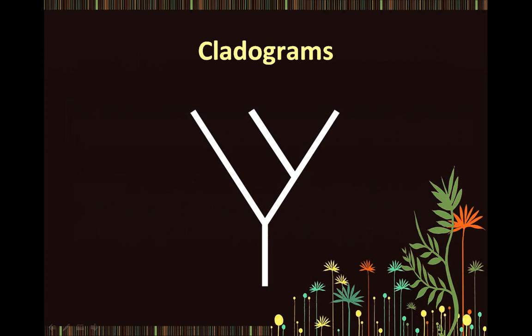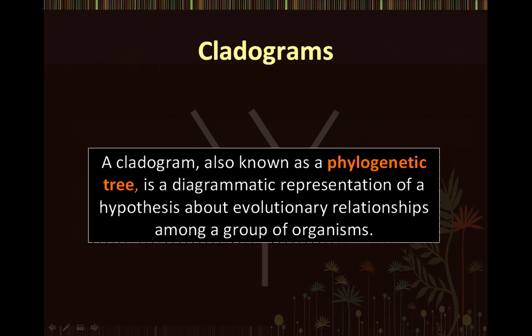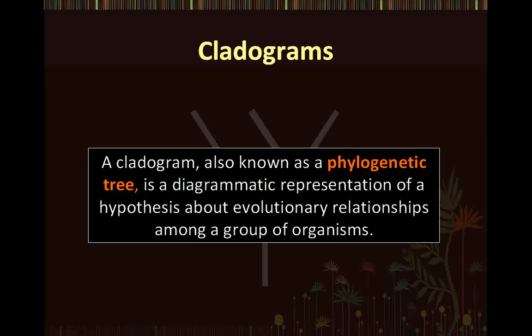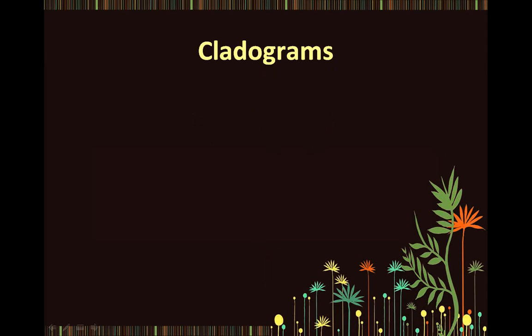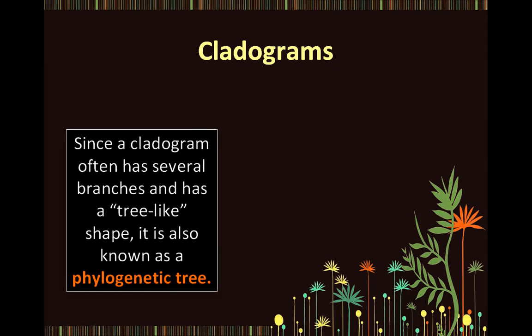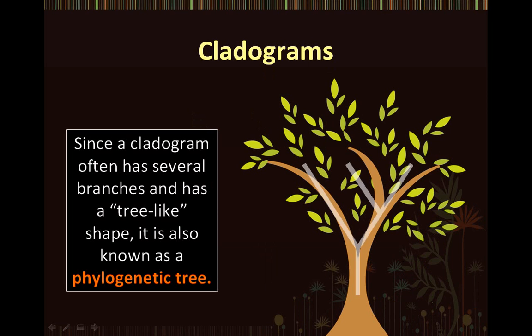Let's discuss cladograms. A cladogram, also known as a phylogenetic tree, is a diagrammatic representation of a hypothesis about evolutionary relationships among a group of organisms. Since a cladogram often has several branches and has a tree-like shape, it is also known as a phylogenetic tree.